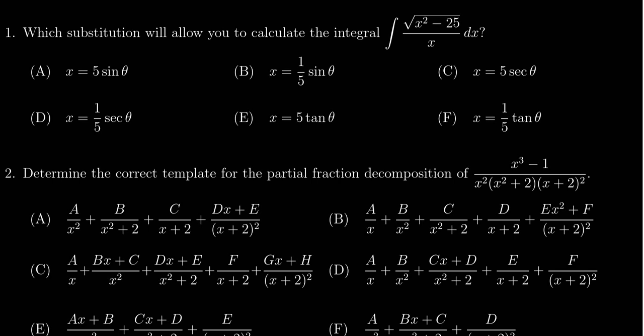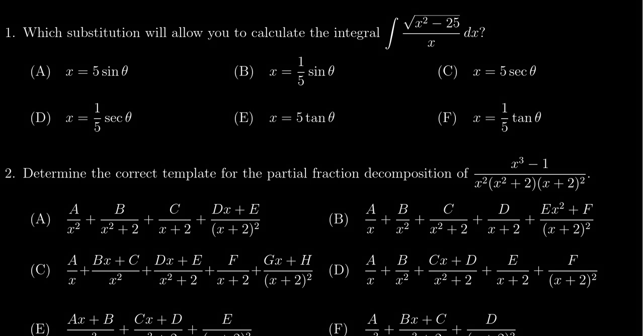In this video we provide the solution to question number one for practice exam number two for Math 1220. We're given an integral, the integral of the square root of x squared minus 25 over x dx, and we're asked which trigonometric substitution will allow us to calculate this integral.